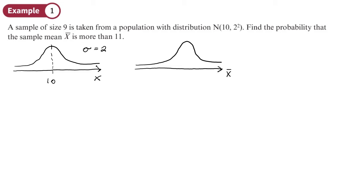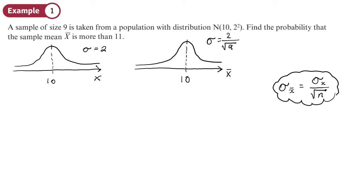Our sample distribution is also going to be normally distributed — that's because of the central limit theorem — and will also have a mean of 10. The variance of this sample mean will be the variance of the population divided by the sample size. We need to calculate the probability that the sample mean is greater than 11, which is the area in the upper tail of the distribution.